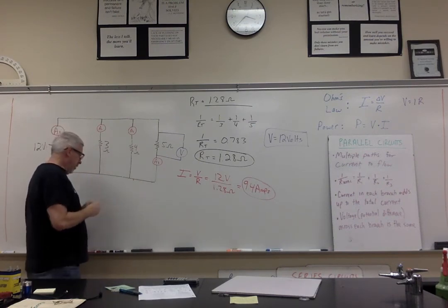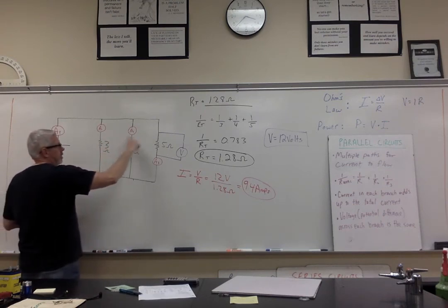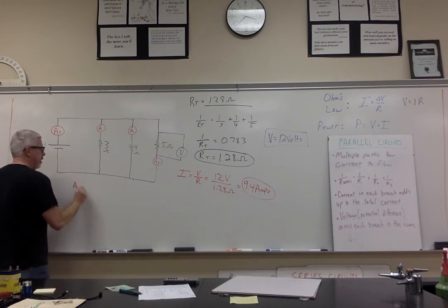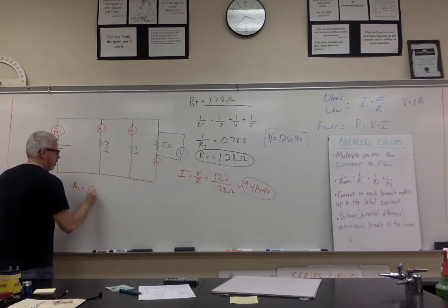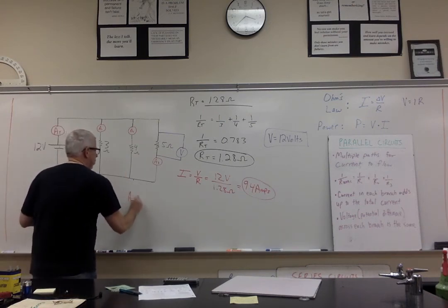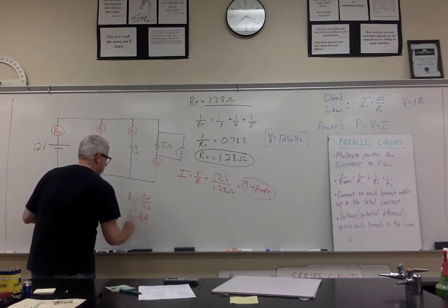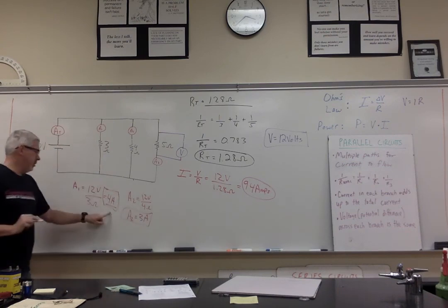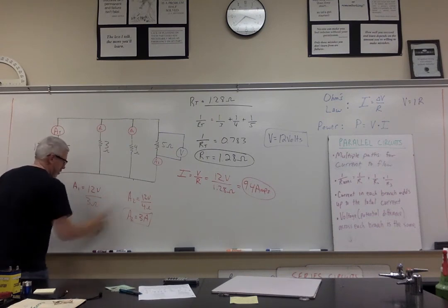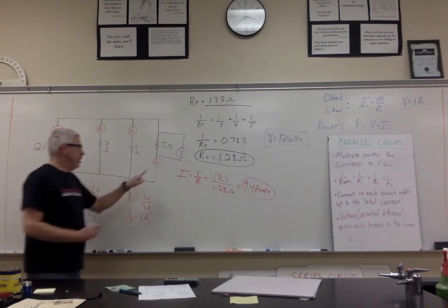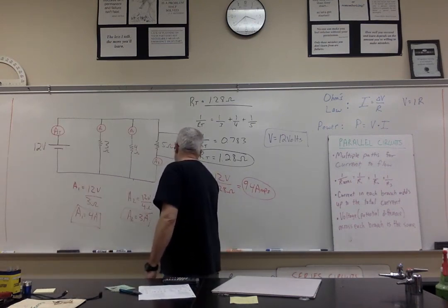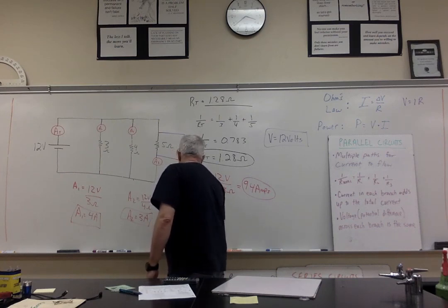Now I can figure out the current through each branch. The current through A1 is 12 volts divided by 3 ohms — that's 4 amps. The current A2 is 12 volts divided by 4 ohms — that's 3 amps. The voltage through branch A3 is 12 volts divided by 5 ohms — that's 2.4 amps.